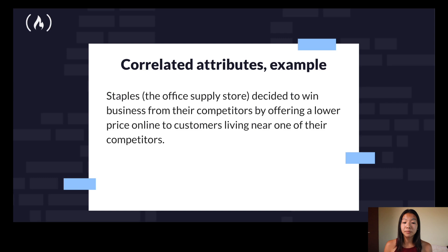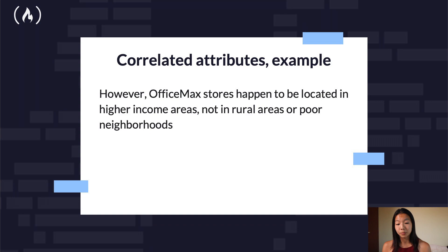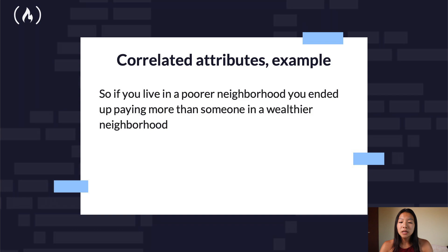An example of correlated attributes: Staples decided to win business from their competitors by offering lower prices online to customers living near one of their competitors. However, OfficeMax stores happen to be located in higher-income areas, not rural areas or poor neighborhoods. So if you live in a poor neighborhood, you ended up paying more than somebody living in a wealthier neighborhood. Staples was not intending to offer better prices to people in higher-income areas — they were just trying to compete with OfficeMax. But there was a correlation between income level and where OfficeMax stores are located.